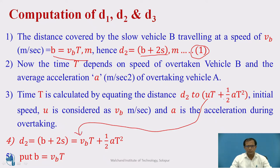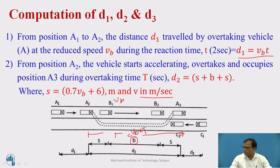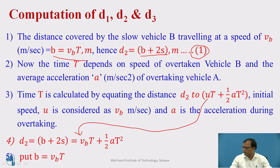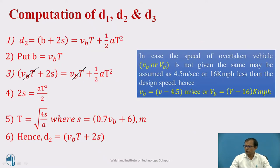The initial speed U is VB, since at position A2 the overtaking vehicle is traveling at speed VB. Replacing U with VB: B plus 2S equals VB·T plus half·A·T squared. Since B equals VB·T, substituting on the left-hand side gives VB·T plus 2S equals VB·T plus half·A·T squared. The VB·T terms cancel, leaving 2S equals half·A·T squared.